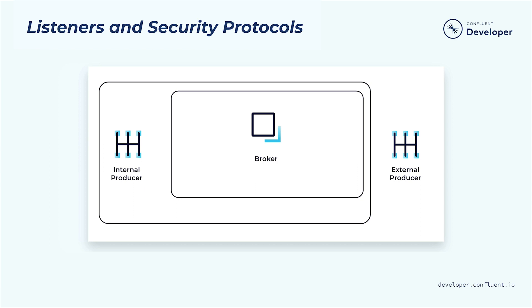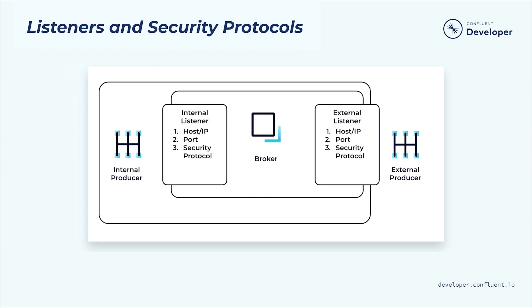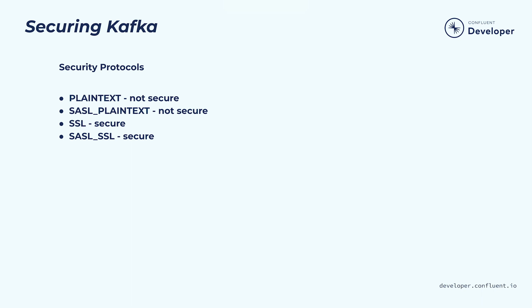So how do you actually configure authentication in a Kafka-based system? There are two things you need to know about: listeners and security protocols. When you configure a broker, you specify one or more listeners, which determine hostnames or IP addresses and ports clients can use to reach the broker. Each listener also specifies a security protocol that will be used to authenticate connection requests. Kafka supports four different connection protocols: plain text, SASL plain text, SSL, and SASL SSL. Only SSL and SASL SSL are secure.